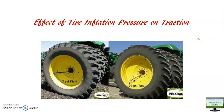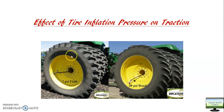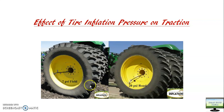Today I am going to make a new video on the effect of tire inflation pressure on traction. You can see there are two photos on my screen — both are the same tires. In the first case, the inflation pressure is around 7 psi and this is working in the field. In the second case, it is the same tire and same tractor but inflation pressure is 20 psi on the road.